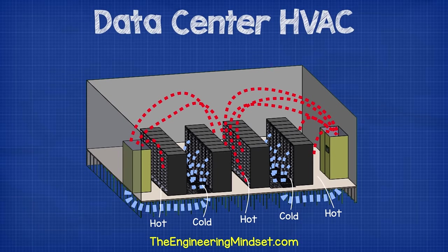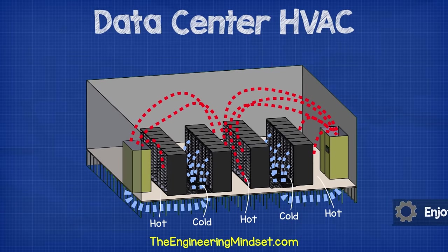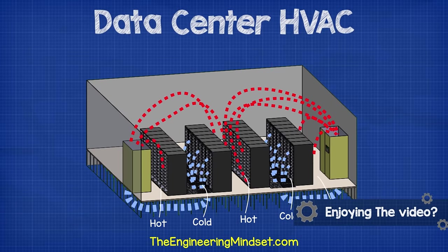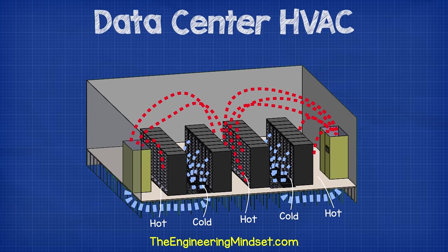The next strategy used, which is still very common today, is the use of hot and cold aisles. This is a great improvement on the previous designs because it separates the fresh cold air stream from the hot discharge air. The cold air rises out from the floor grills and is pulled through the servers. All the hot discharge air collects into the hot aisle and rises up towards the ceiling but is then pulled back into the CRAC units. This increases the temperature differential across the CRAC unit's heat exchanger and that will improve the efficiency of the machine.